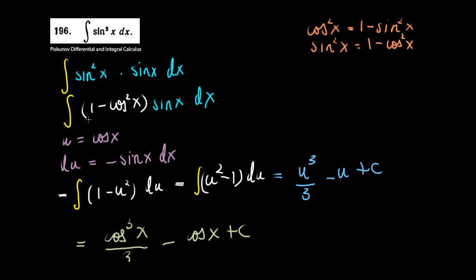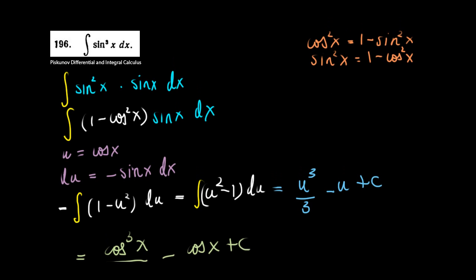This 1 minus cosine squared was written as sine squared and multiplied by sine x, written as the integral of sine cubed x just to confuse people and make them feel they cannot do it. But you always can. I'll see you in the next video.